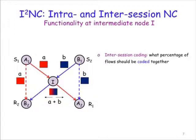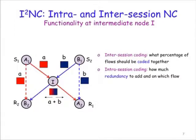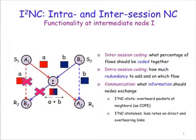Our I2NC scheme introduces the following functionality to be implemented at intermediate node I. First, node I needs to perform inter-session network coding similar to COPE. In addition, it needs to decide what percentage of loss should be coded together, given that there will be loss on the direct and overhearing links. Second, node I performs intra-session network coding. It adds redundancy to deal with loss on the direct and non-overhearing links, and also decides how much redundancy to add and on which flow to add it.